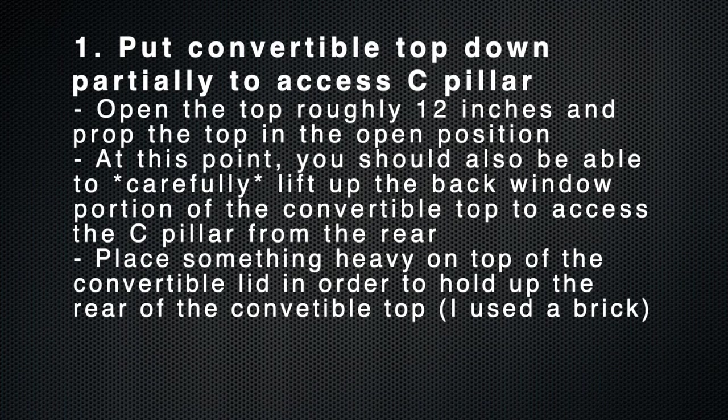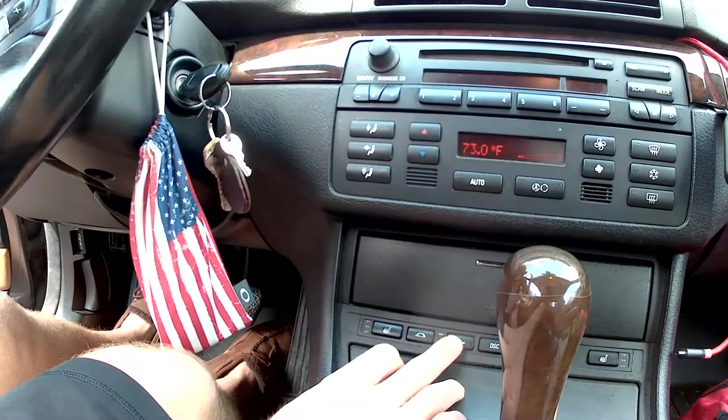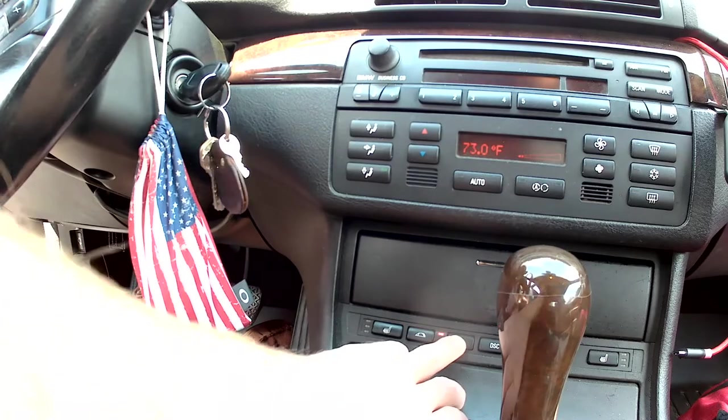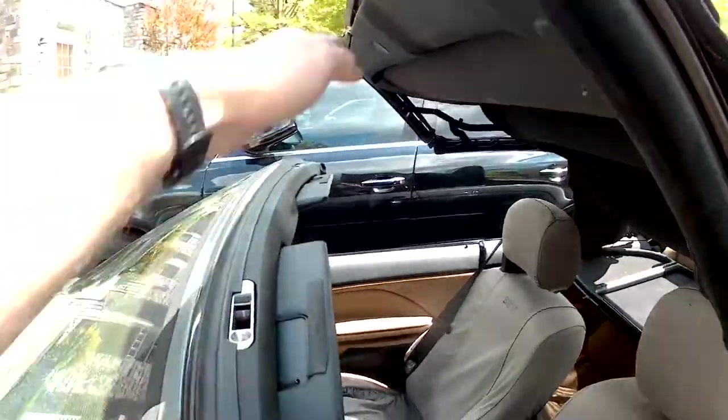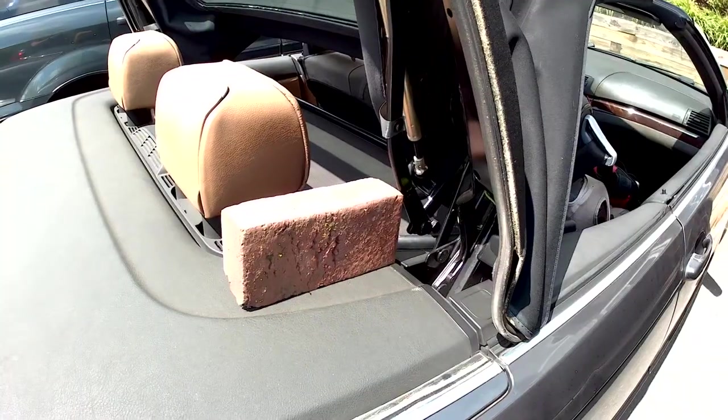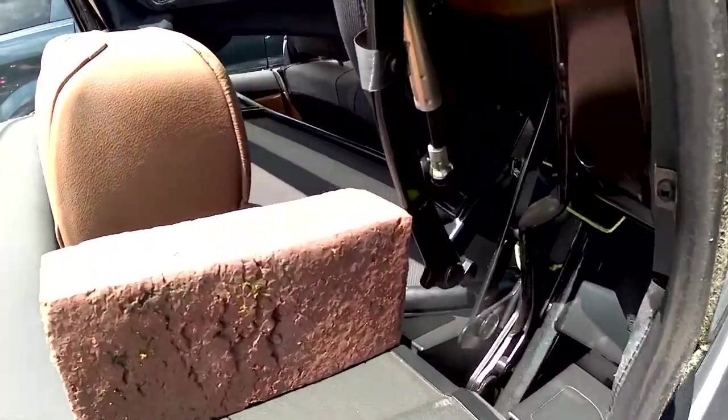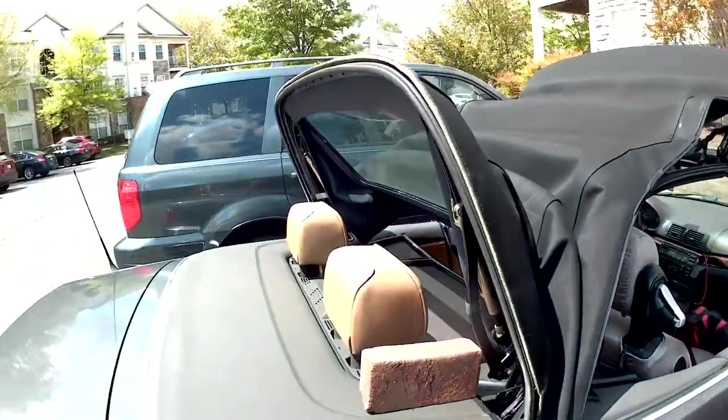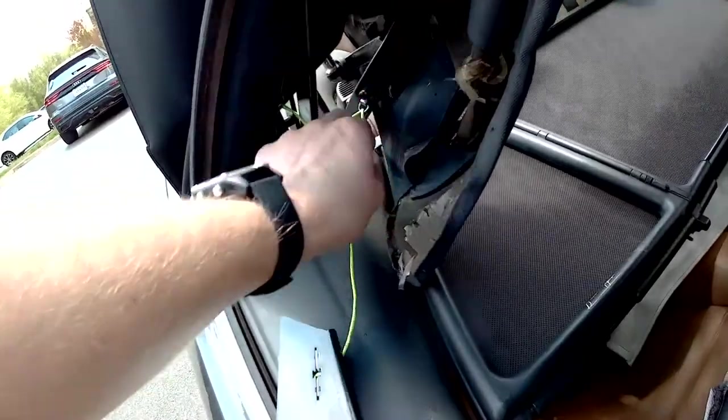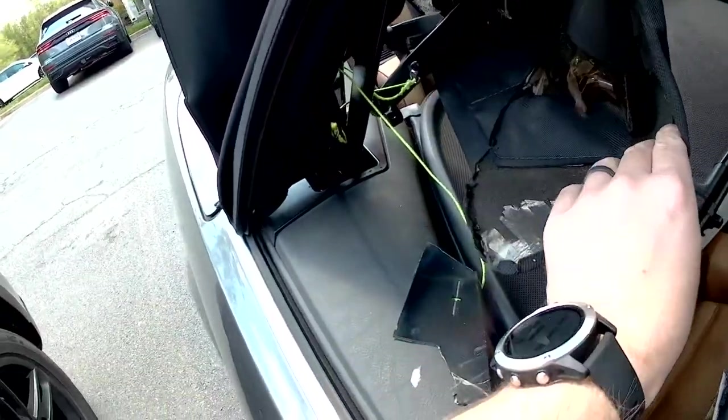The first step is to open the convertible top roughly 12 inches so that you can access and manipulate the pieces that you need to. Go ahead and hold the button until it's right about this level, give or take 12 inches, and then I flipped up the back carefully and placed a brick there so that I could get in and out both ways, and then went ahead and removed my old cracked pieces.